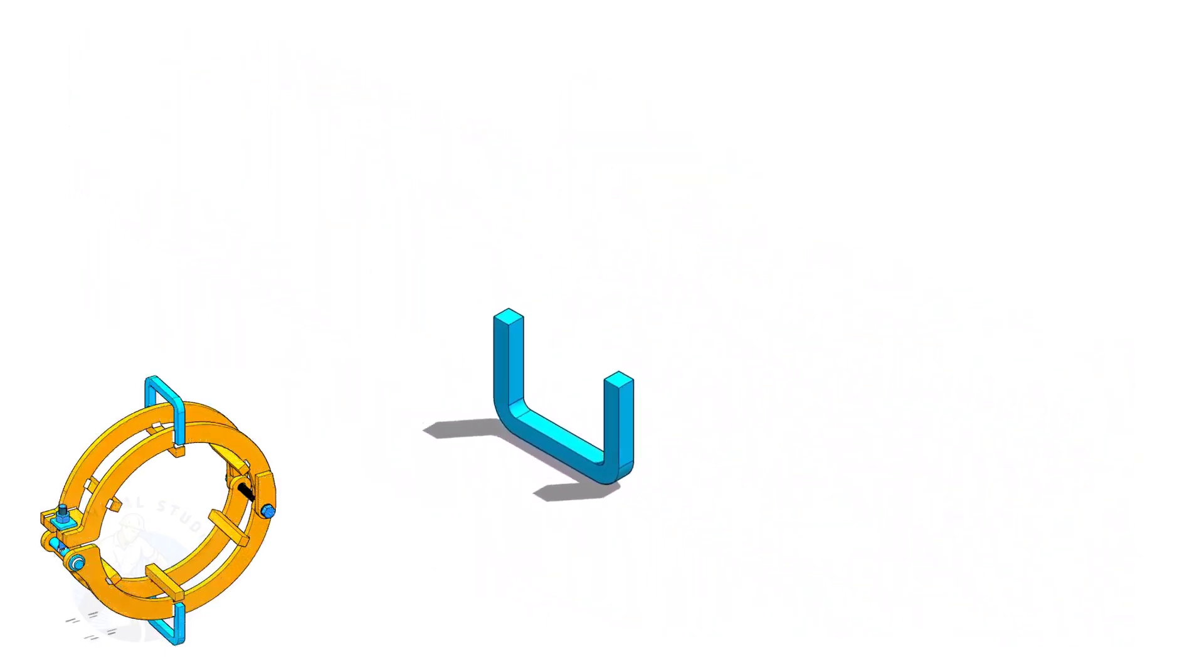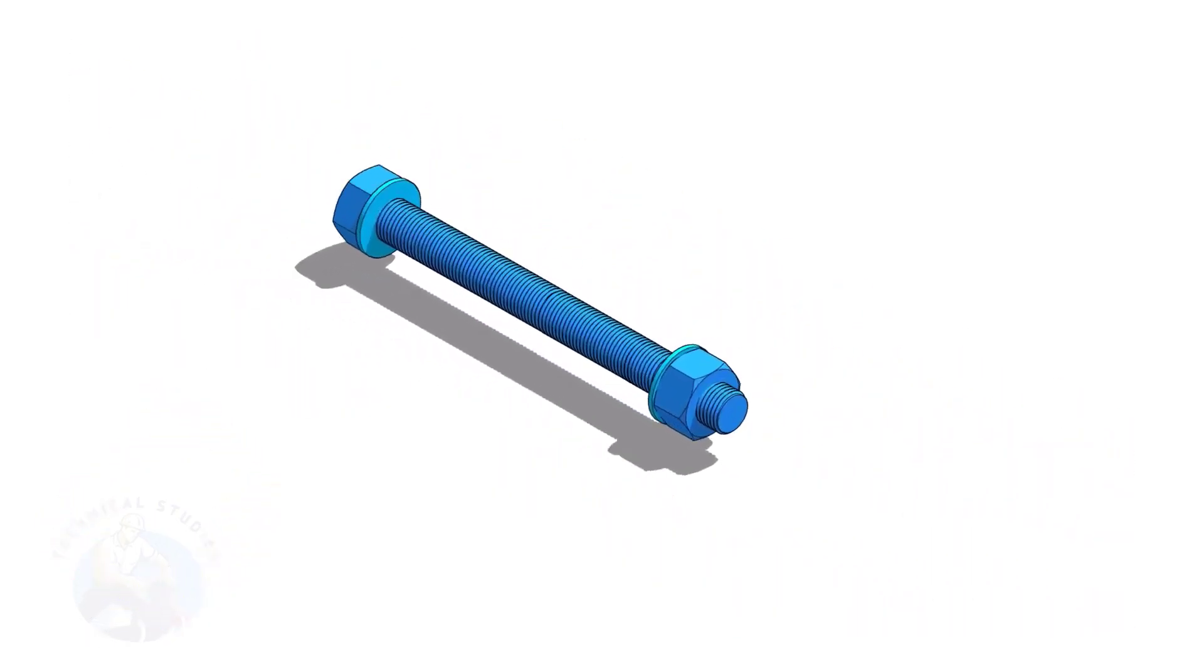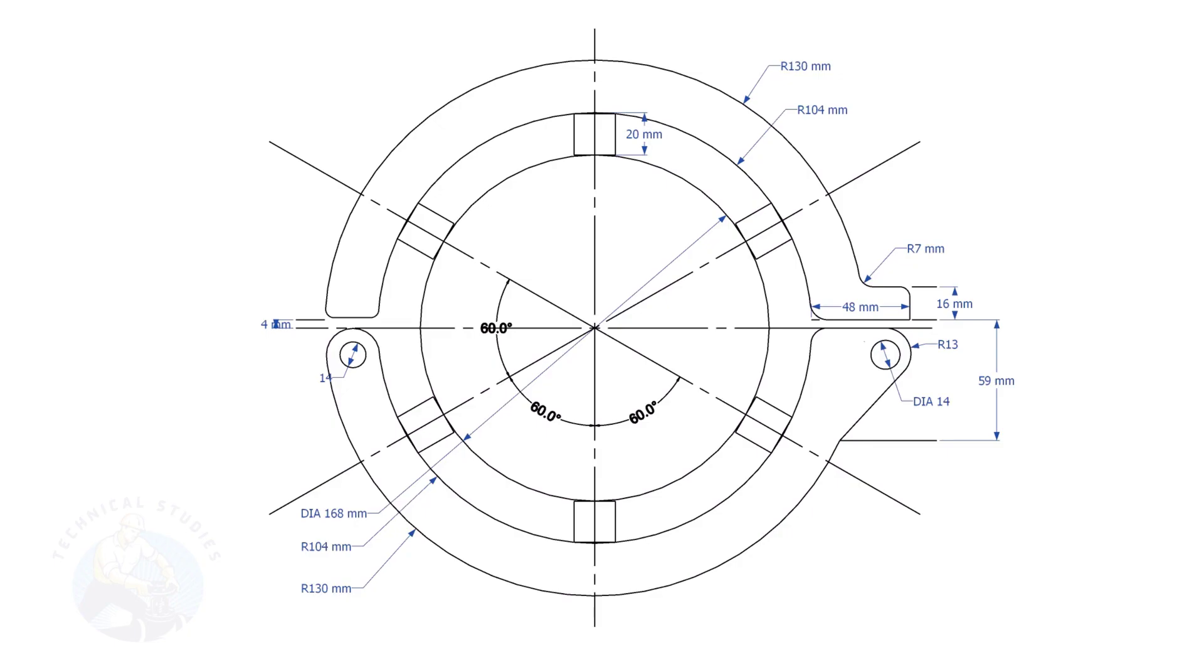Let us make the different parts of the pipe clamp. This is the main part of the clamp. I will explain to you how to layout this. There are two parts for the main body, the upper half and the lower half. Each part of the body, there are two pieces.